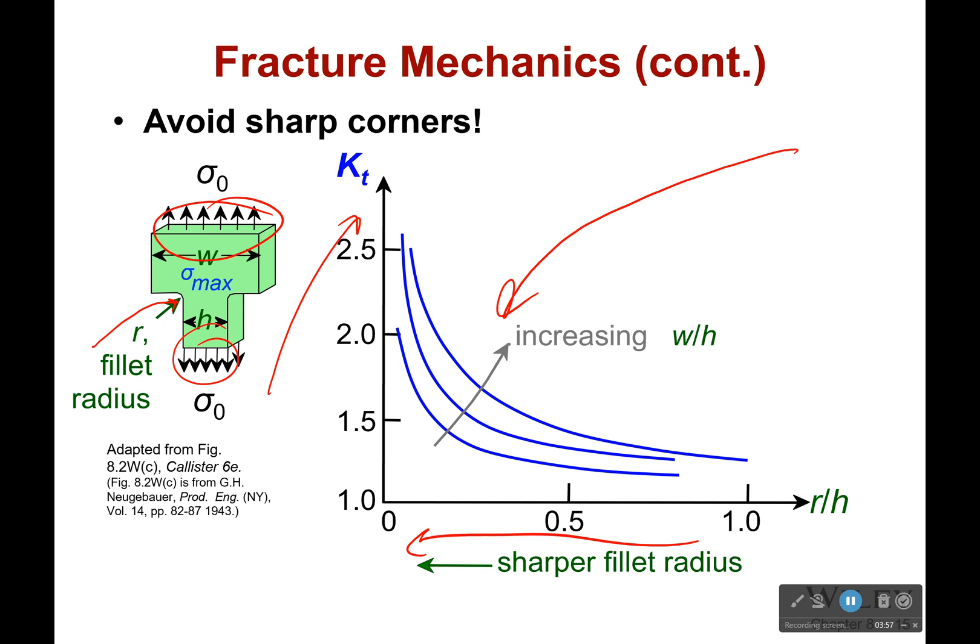The larger our radius, the smaller my stress concentration factor, and also the smaller the difference between various things. Like, if I want to go from a big width to a small width, if I do it over a very large radius, there's really not that much of a change in its stress concentration. It's okay with that. Just make it a really big radius and you won't have to worry about it too much.